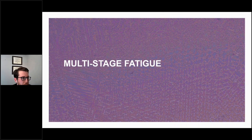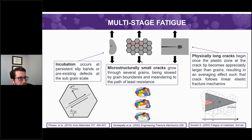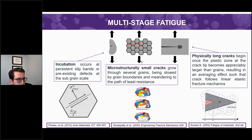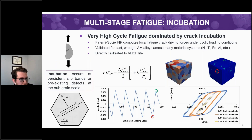So with that, I'm going to talk about how Questec approaches fatigue modeling, accounting for various time and length scales and the influences of microstructure. Fatigue in general is a multi-stage process, starting with crack incubation at the sub-grain scale and transitioning to microstructurally small crack growth, where cracks can grow along seemingly erratic paths through the first three to ten grains, as they follow the path of least resistance and are highly influenced by microstructure features. Until finally, once the crack is long enough, the plastic zone at the tip of the crack is sampled in enough grains that their individual effects average out, and we get to physically long crack growth, which is dominated by linear elastic fracture mechanics.